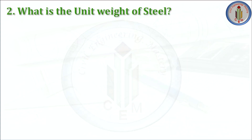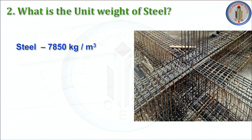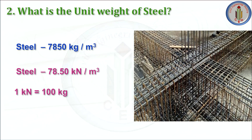Next question: what is the unit weight of steel? For reinforced steel, that is 7850 kg per meter cube. You have to remember this unit weight always — it will be very helpful when you attend interviews. Sometimes interviewers ask for the answer in kilonewton per meter cube. The unit weight of steel in kilonewton per meter cube is 78.5, since the unit conversion is 1 kilonewton equals 100 kg.